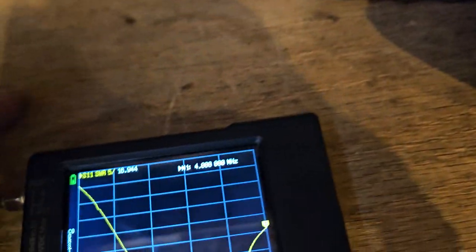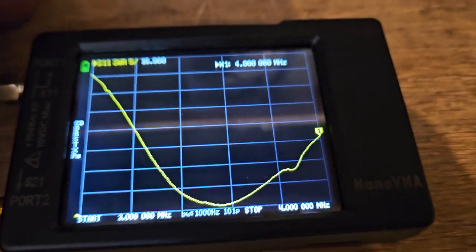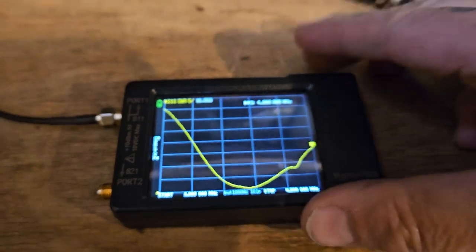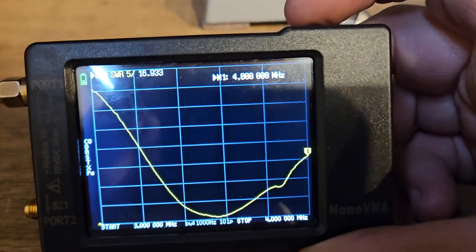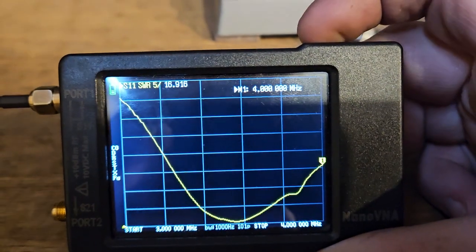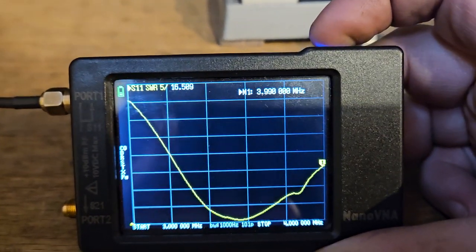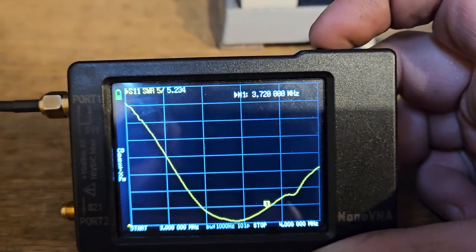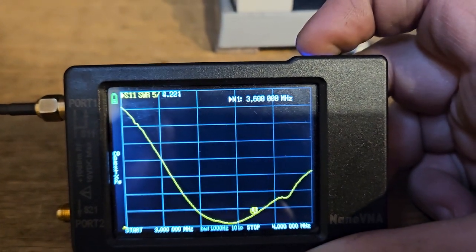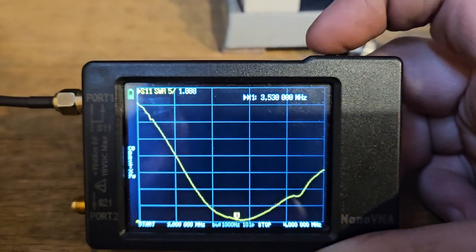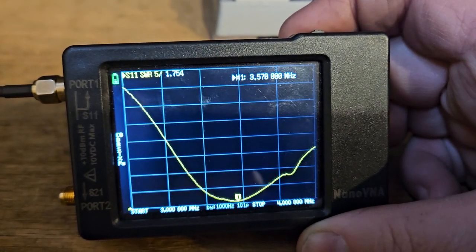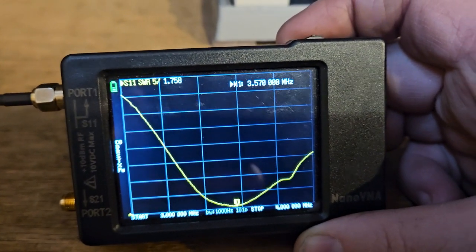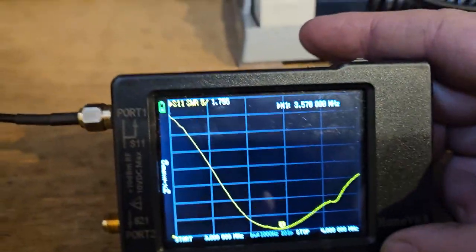Let me switch this off. This is going to be where we're going to be at. So 3.57 is going to be the lowest point on 80.